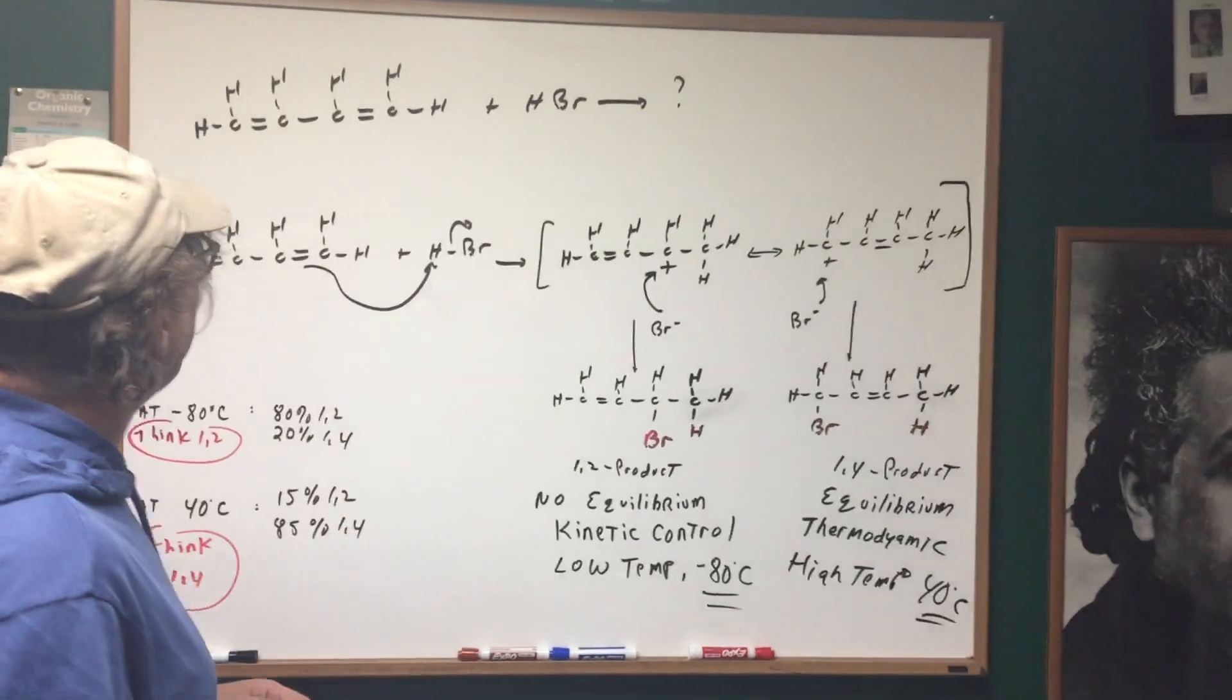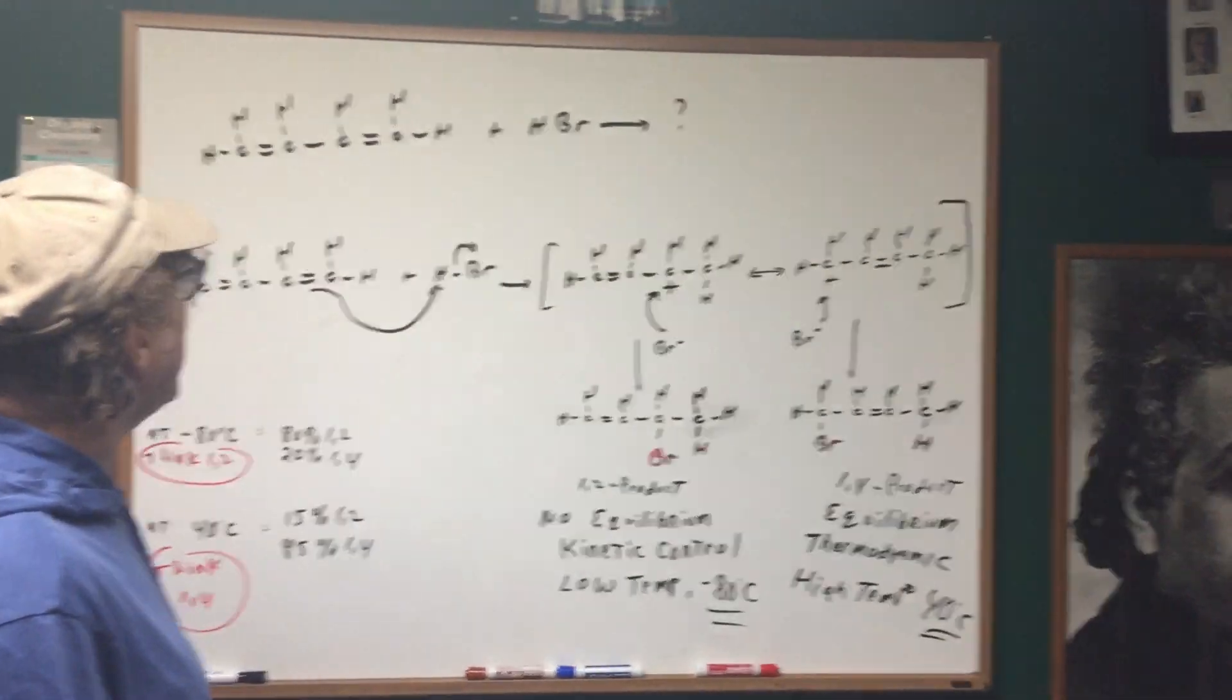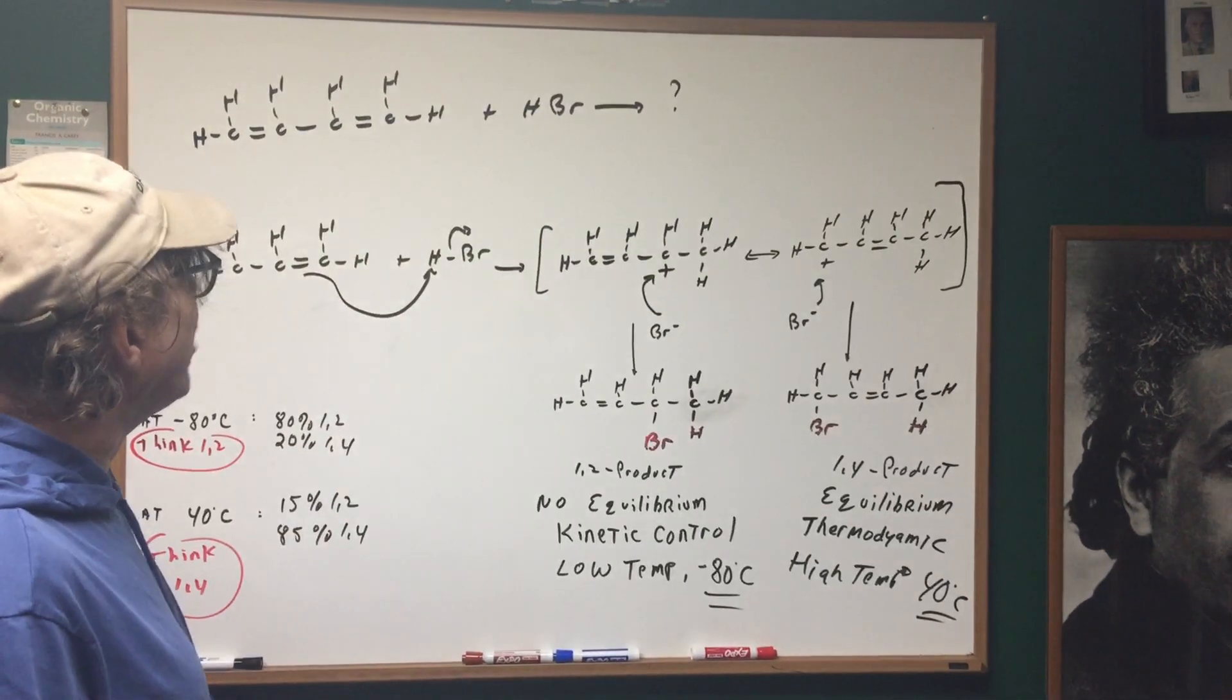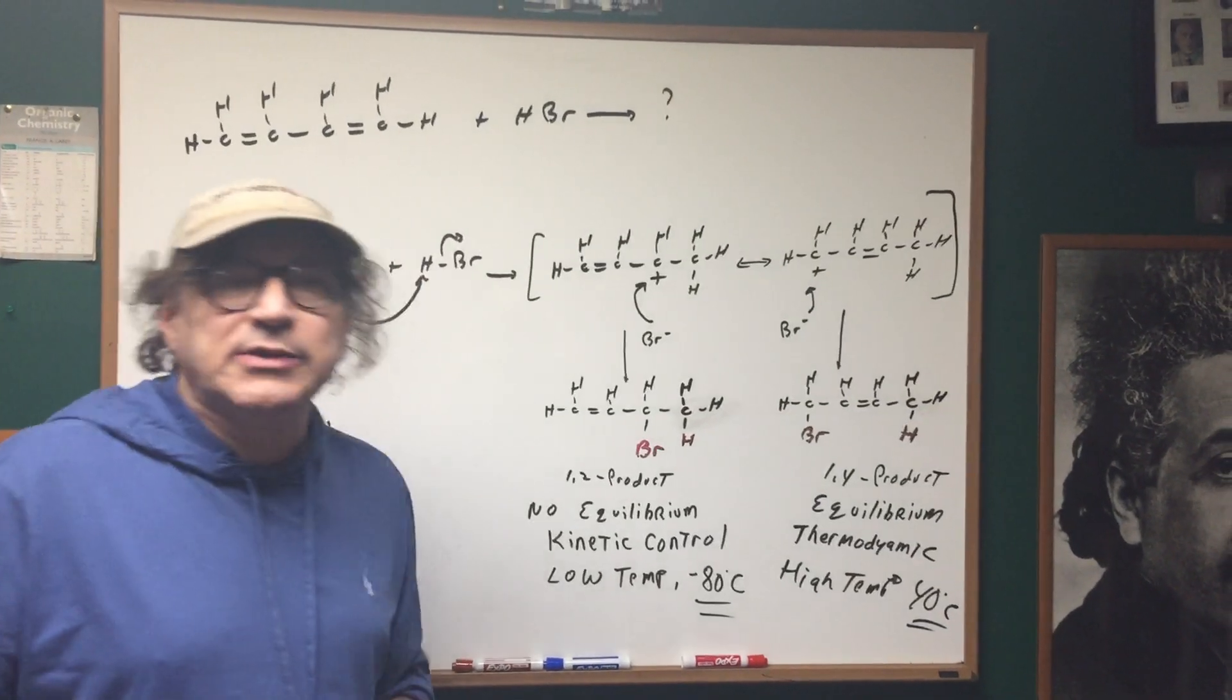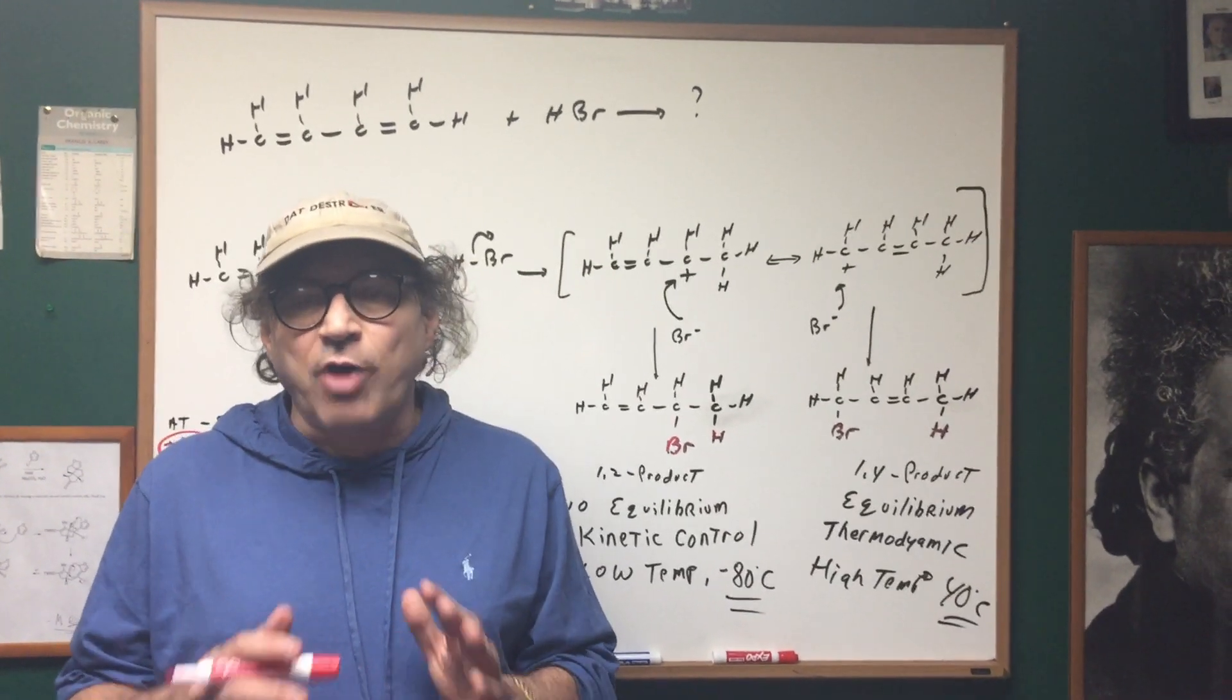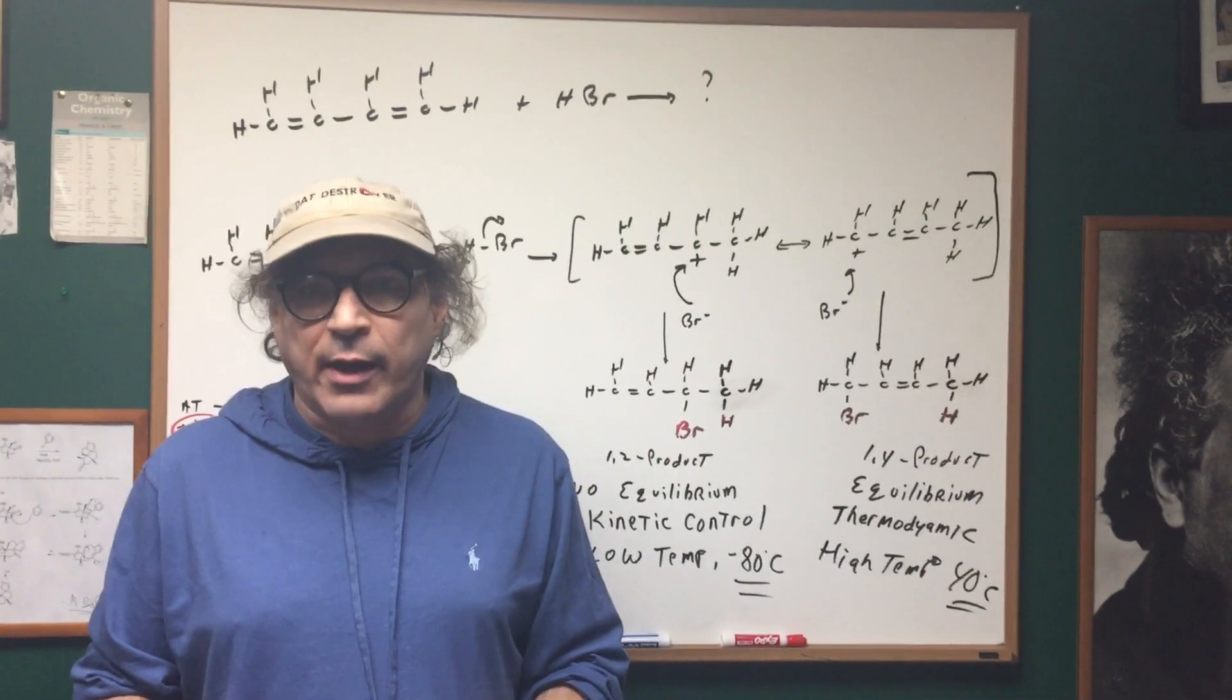In this example, I'm going to give you a molecule, 1,3-butadiene, and we're going to react it with HBr. Now you always get two products whenever you have a conjugated diene reacting with something like HBr or HCl.